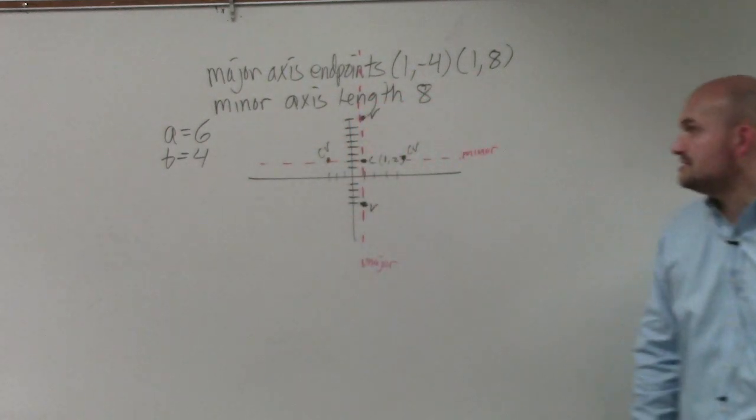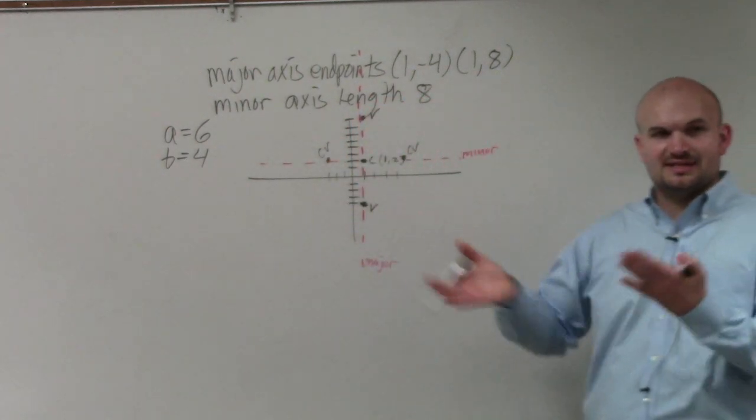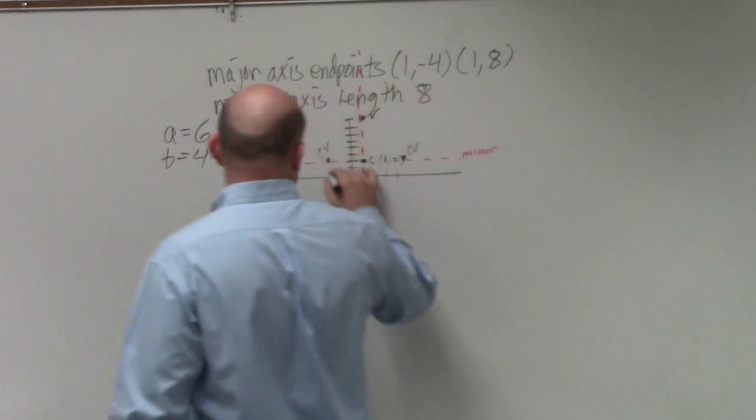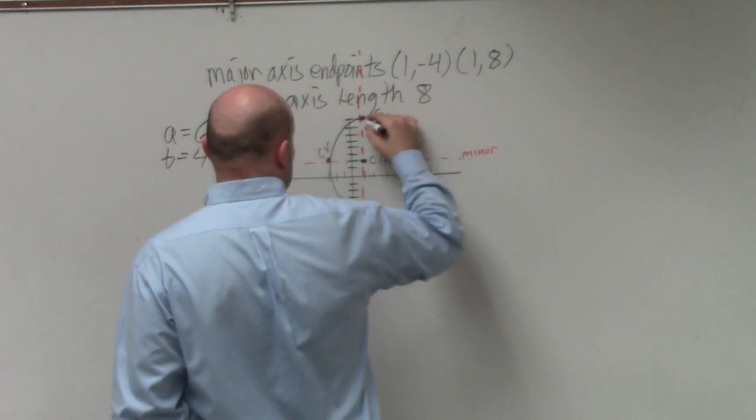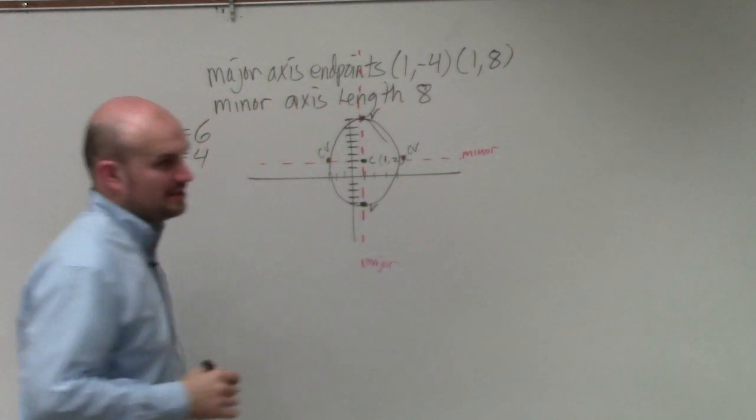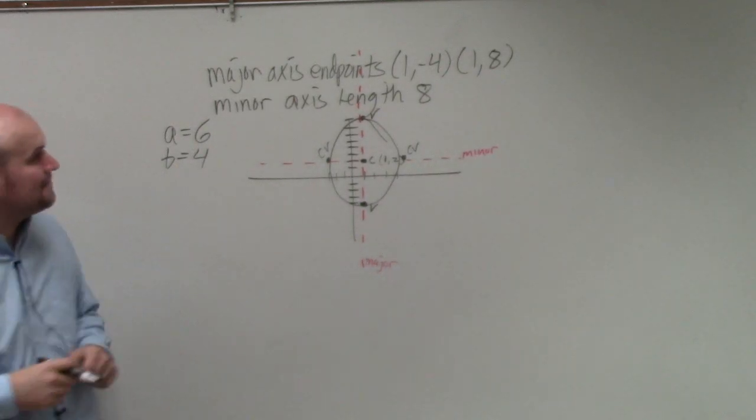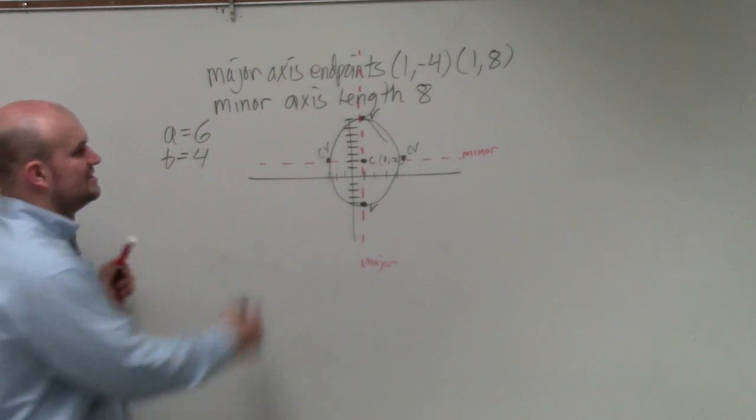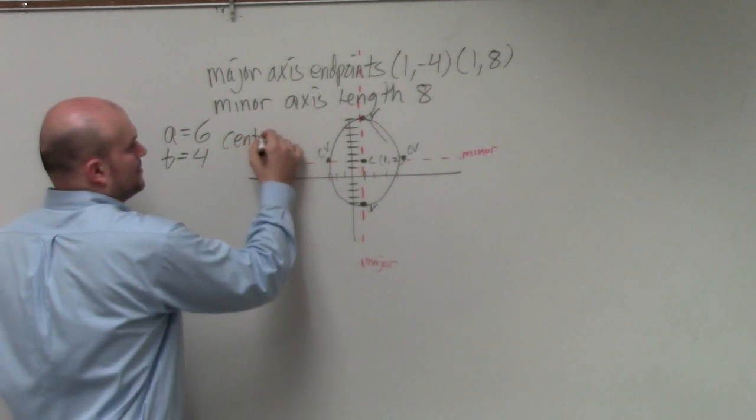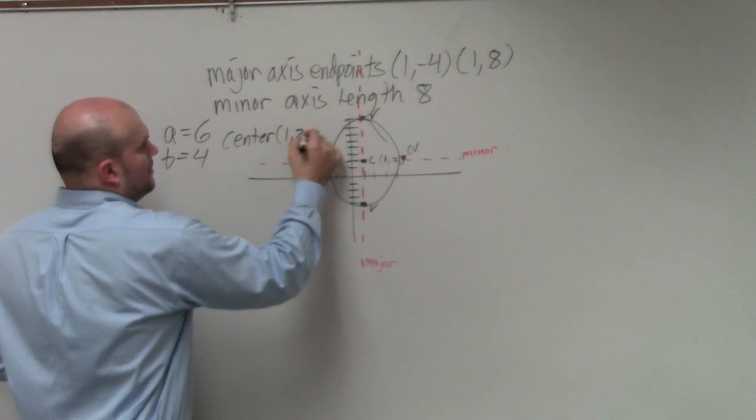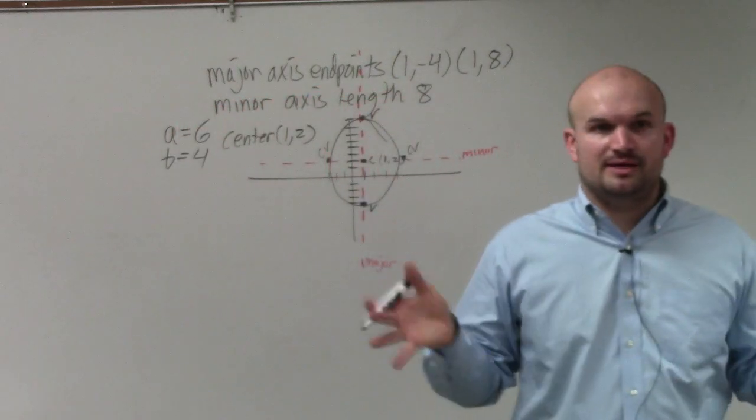Now, you're not identifying your co-vertices, but it's just nice just so you guys can kind of see. If you were to graph this, your graph would look something like that, but you don't have to do that. It's just visually, for me, I like to do that. All right. So does everybody see how we found the center? My A and my B. Does everybody see how we found the center, A and B?